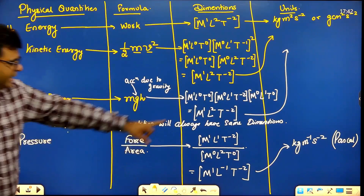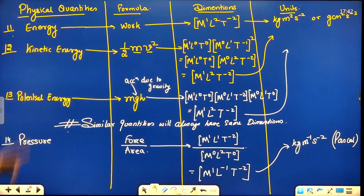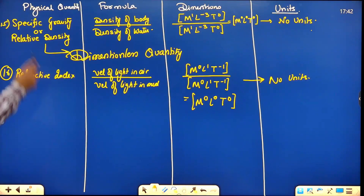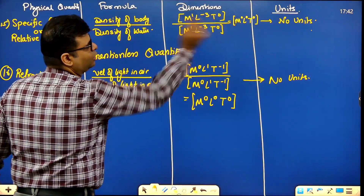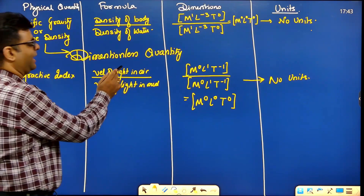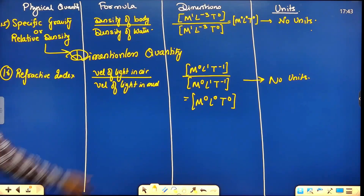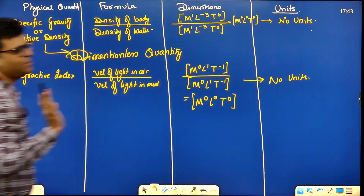Pressure is force upon area. We already found force dimensions and area dimensions, so divide both. Specific gravity is density of body divided by density of water — both are density, so dimensions cancel: M⁰L⁰T⁰. Refractive index is velocity of light in air divided by velocity of light in medium — velocity upon velocity, dimensions cancel, answer is M⁰L⁰T⁰.